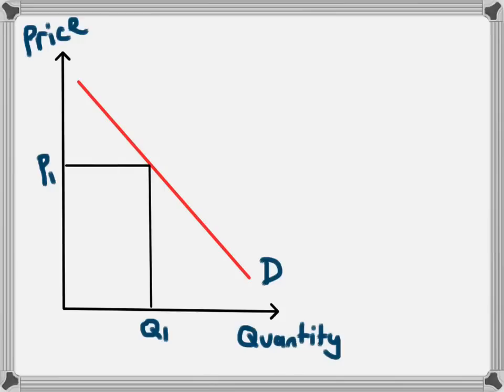A good example of this would be if there was an increase in the size of the population. When the population increases there will be more people buying this product at that price level. So now at P1 instead of demanding Q1 the population will demand Q2 of this product. This would happen across all of the price levels and as a result we would end up with a new demand curve. We'll call this demand curve D2.